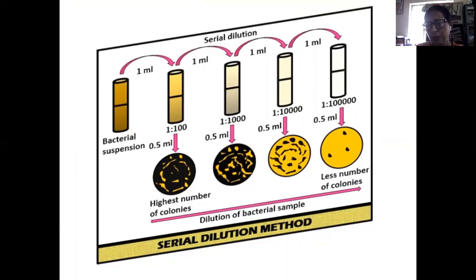The different dilution of the bacterial sample shows the number of colonies. In 10 raised to power minus 2 the highest number of colonies are obtained and as the dilution increases the number of colonies becomes less and separated and it is easier to count. That is why this method is the best method.